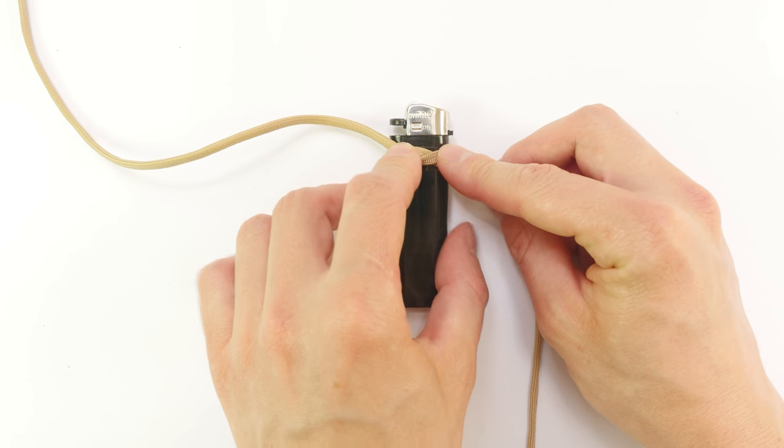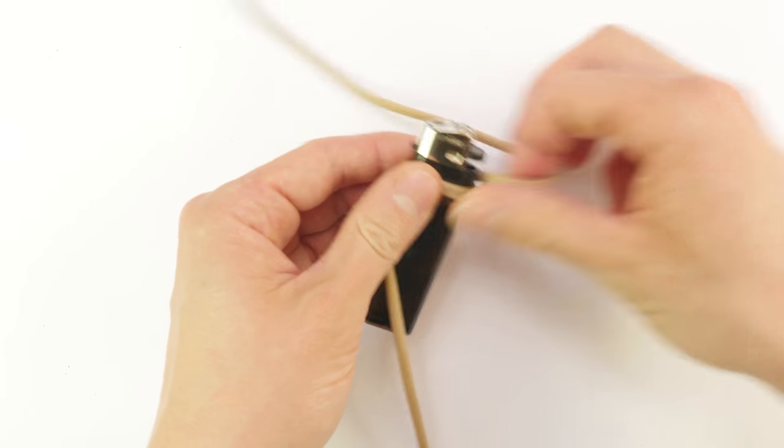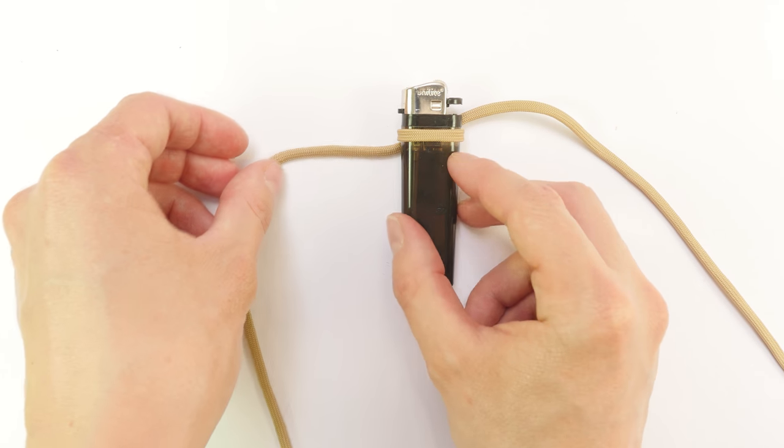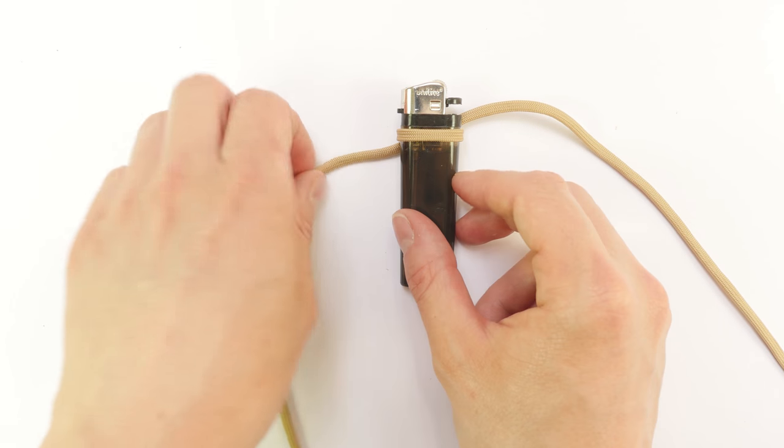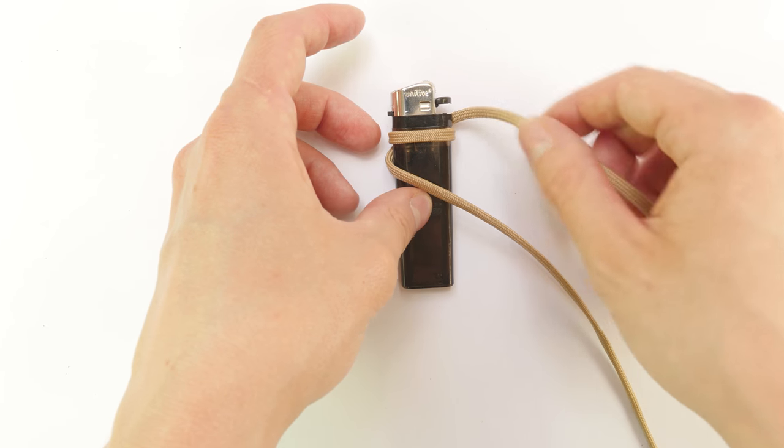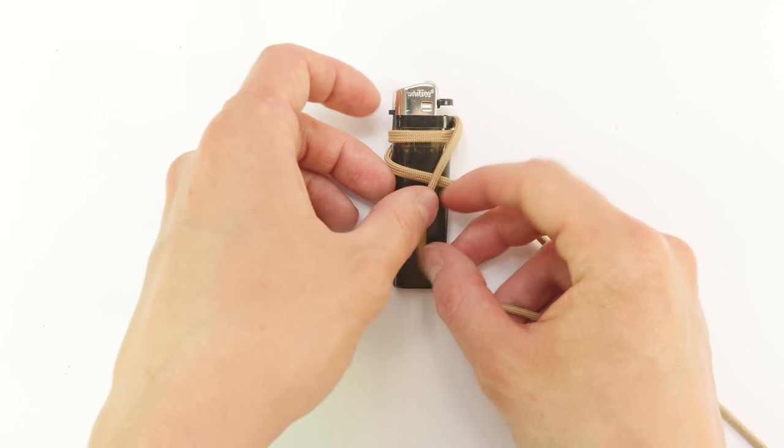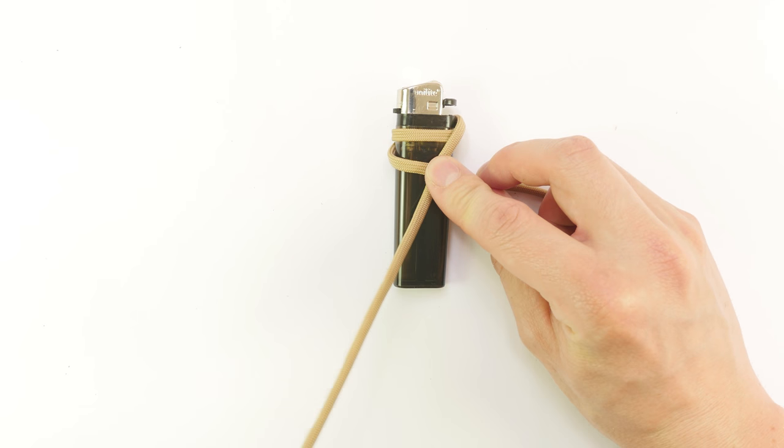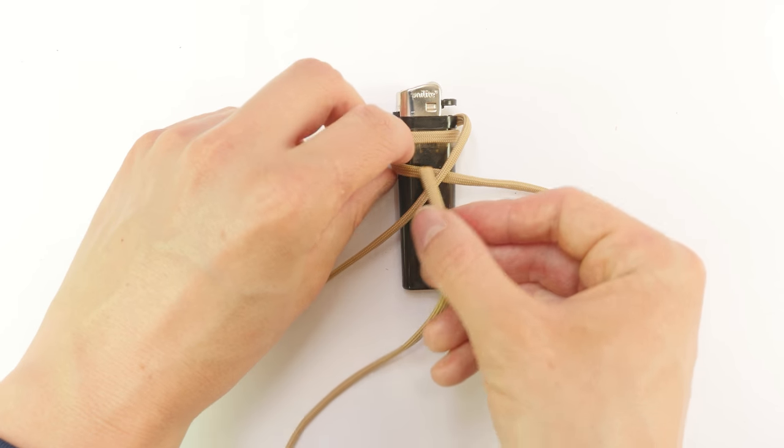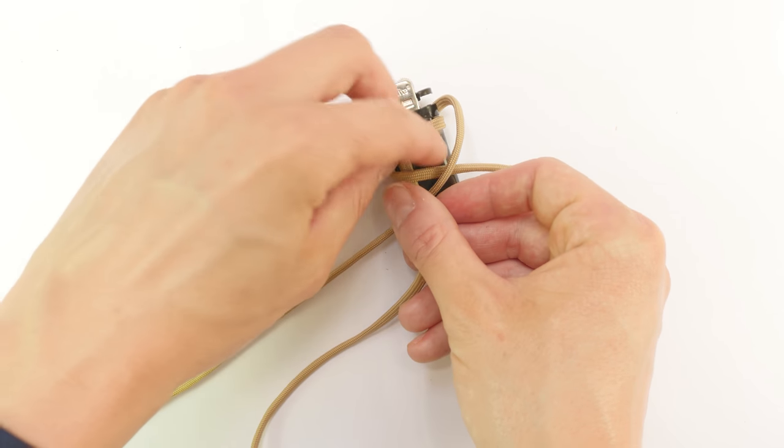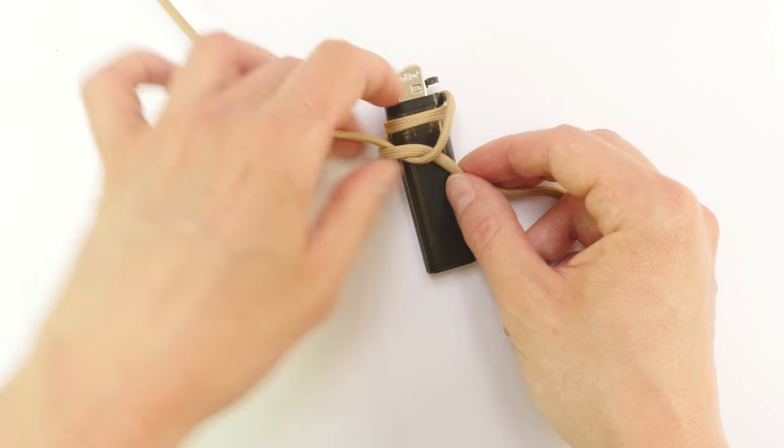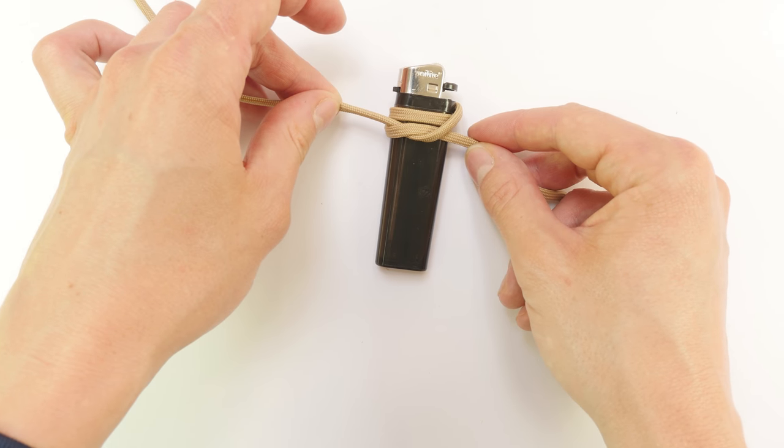Now turn around the lighter and repeat the same process. So the left cord goes over the lighter, then the right cord goes over the lighter, and finally the right end goes under the left end. Then tighten up.